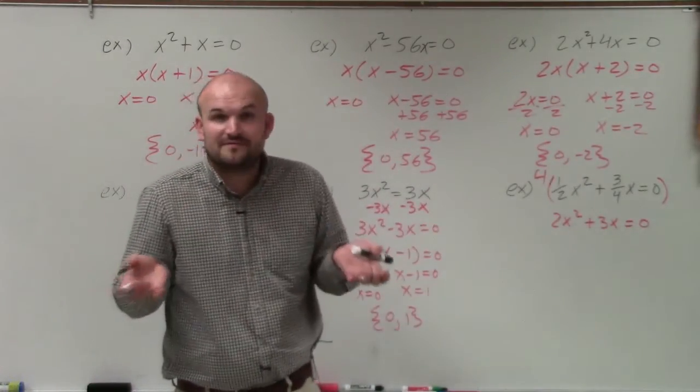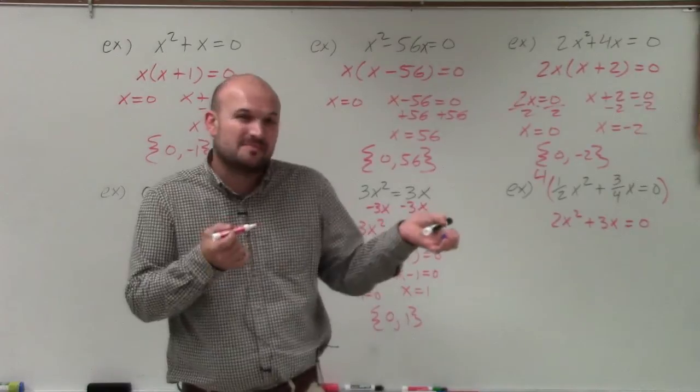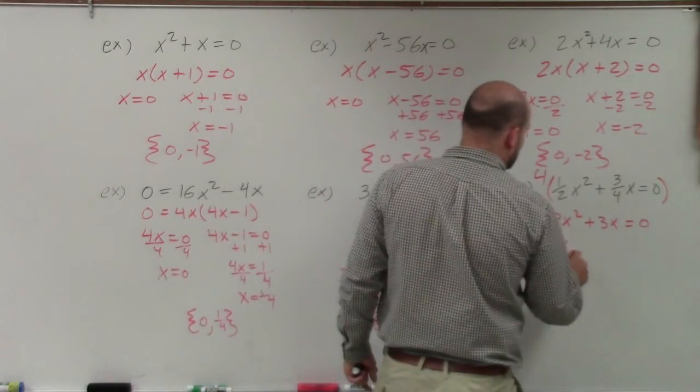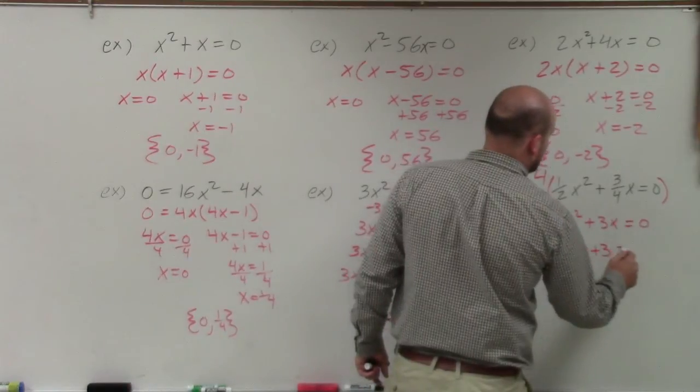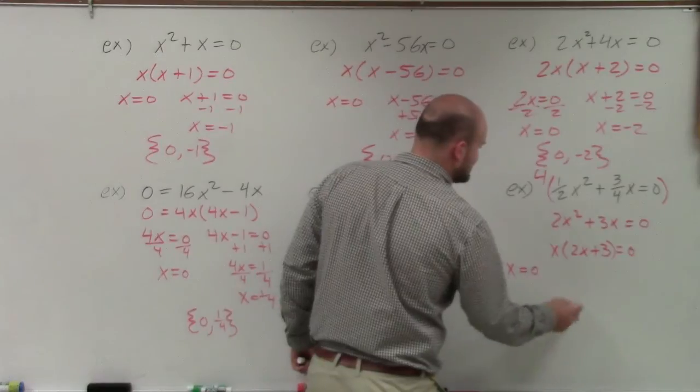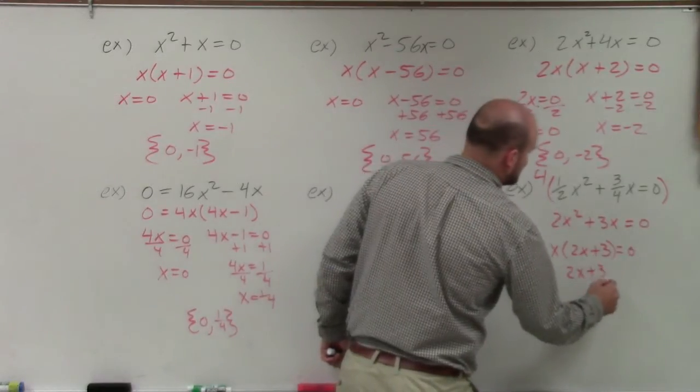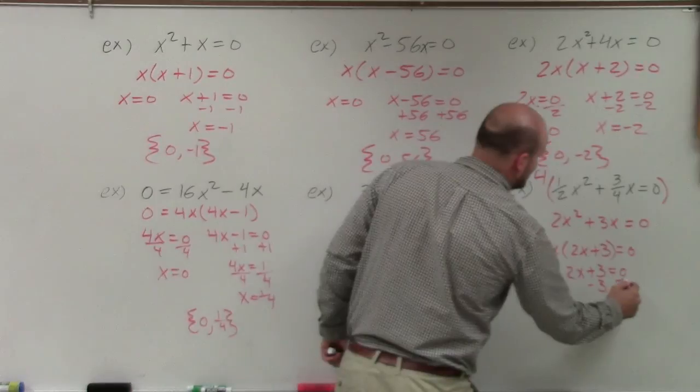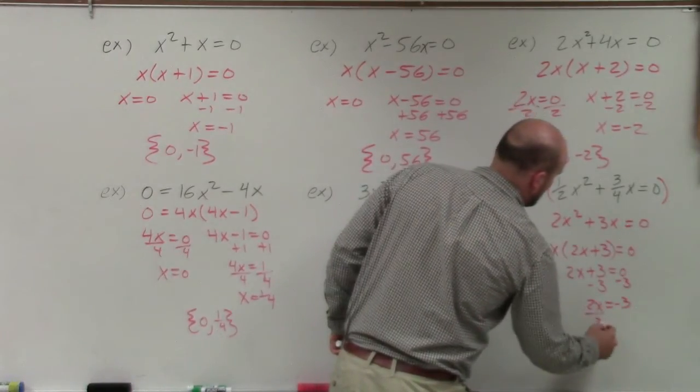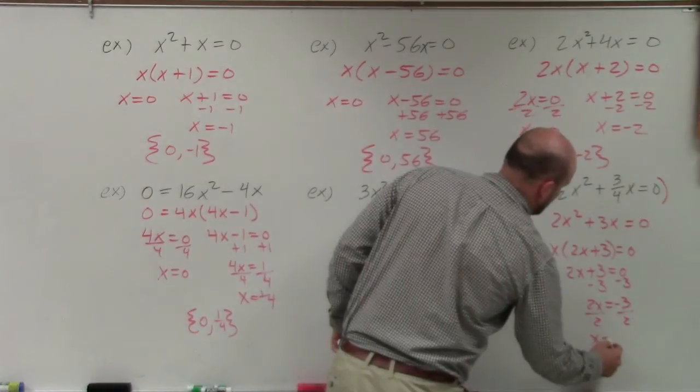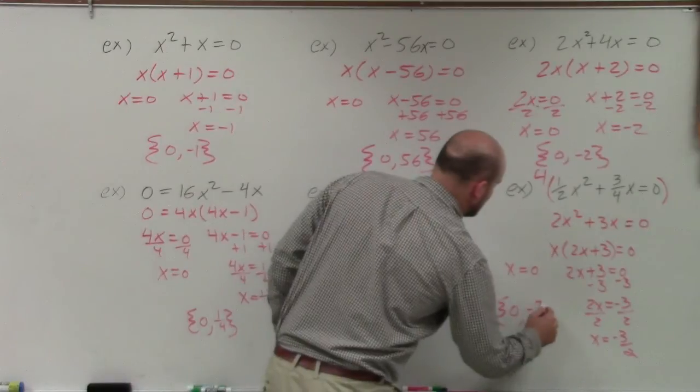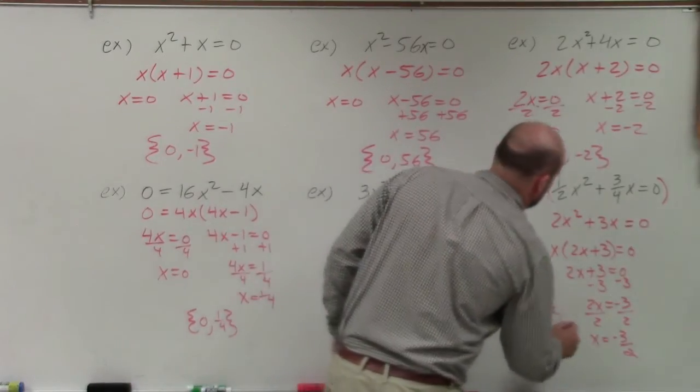Here, 2 and 3, I can't factor anything out in common between 2 and 3. So I can just factor out the x. When I factor out the x, I'm left with a 2x plus 3 equals 0. Now use my zero product property, x equals 0, and 2x plus 3 equals 0. Then you just go ahead and use inverse operations and solve. Therefore, your solution set in this one is 0, negative 3 halves.